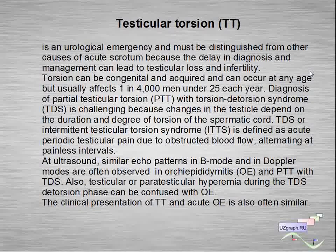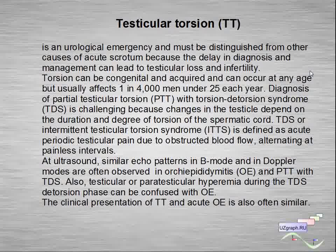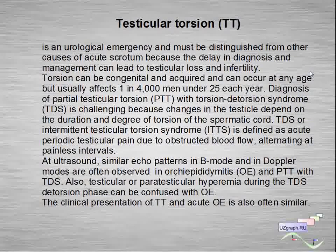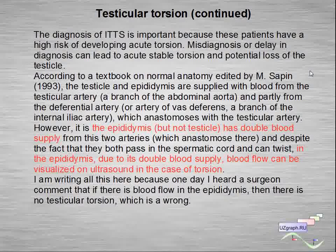Torsion-detorsion syndrome, or intermittent testicular torsion syndrome, is defined as acute periodic testicular pain due to obstructed blood flow, alternating with painless intervals. Similar patterns in B-mode and Doppler are often observed in orchido-epididymitis and partial testicular torsion with torsion-detorsion syndrome. Testicular or paratesticular hyperemia during the detorsion phase can be confused with orchido-epididymitis. The clinical presentation of testicular torsion and acute orchido-epididymitis is also often similar. Diagnosis of intermittent testicular torsion syndrome is important because these patients have a high risk of developing acute torsion, and misdiagnosis can lead to testicular loss.